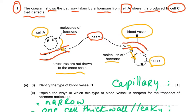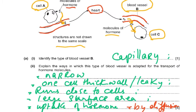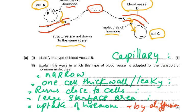Identify the type of blood vessel B. There are three types: artery, vein, or capillary. The capillary has a very thin, permeable wall — it's leaky, it has holes in it — so it allows substances to move in and out. It is the only blood vessel which allows stuff to move in and out.